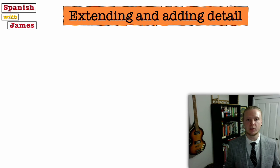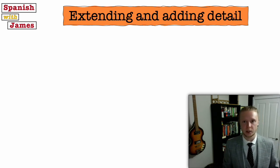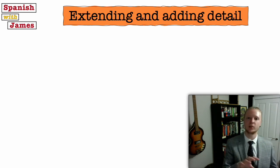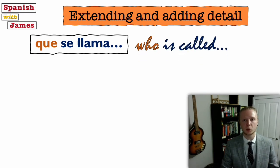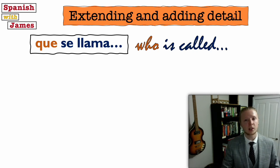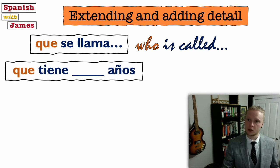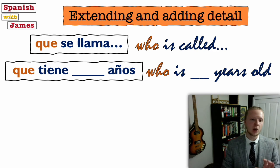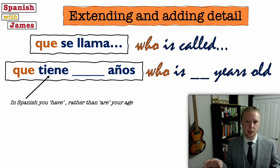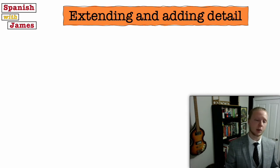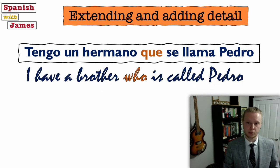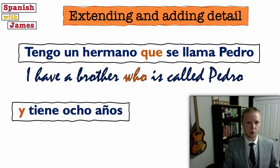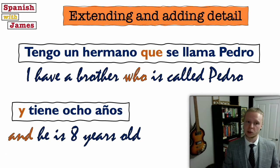We can extend our speaking and writing further by adding extra details such as people's names and ages. The connective que is really useful — it can mean 'who' when talking about a person, and also 'that' or 'which'. I could say tengo un hermano que se llama Pedro y tiene ocho años — I have a brother who is called Pedro and he is eight years old. Remember in Spanish we don't say someone is their age; we say they have so many years.